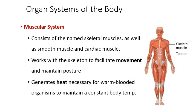The muscular system is for movement — moving your body around in space by attaching skeletal muscle to bone, and also for moving things around inside your body, such as moving blood through your cardiovascular system or moving food through your digestive system. In addition, muscles are highly energetic cells that create a lot of heat as a byproduct, so your muscles are largely responsible for helping maintain your body temperature.